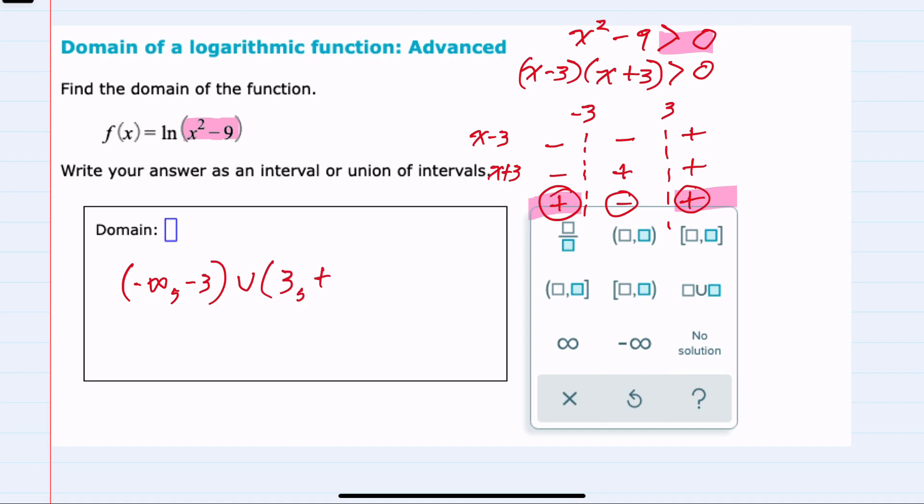The domain of this log is going to be where x is less than negative 3, or x is greater than positive 3.